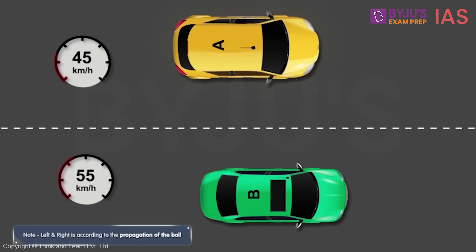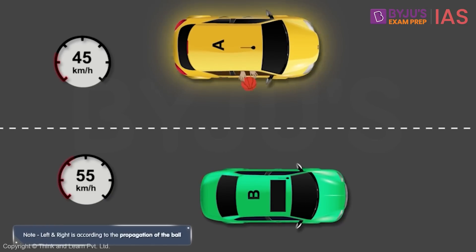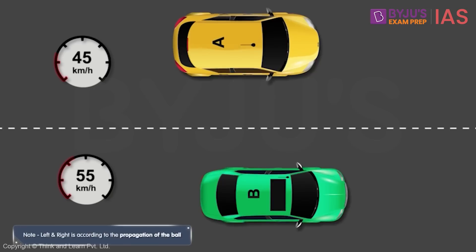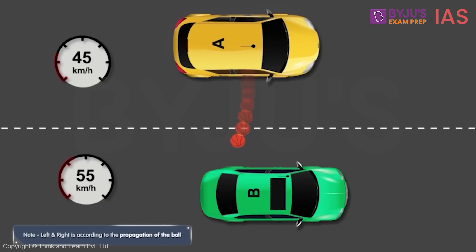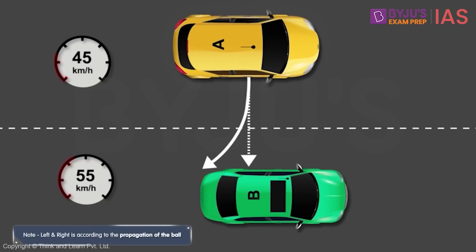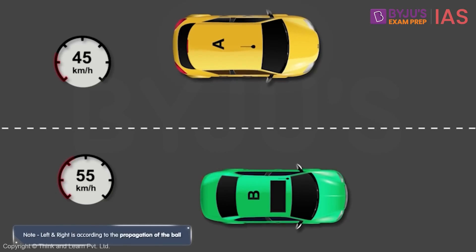Now, consider the second case. Here, ball is thrown by your friend from car A to you in car B. When your friend throws the ball to you, it will again appear to land to the right of you. But this time, it's because you are moving faster than your friend and you have moved ahead of the ball.